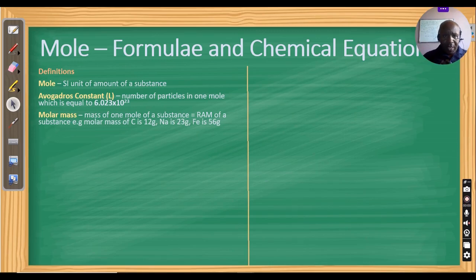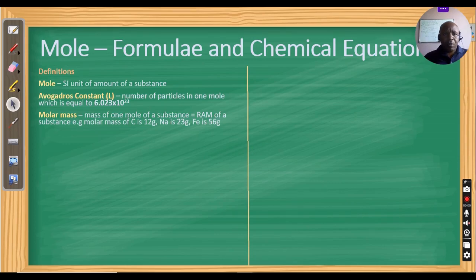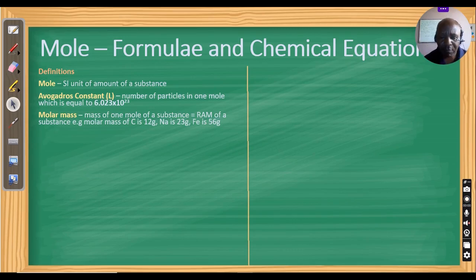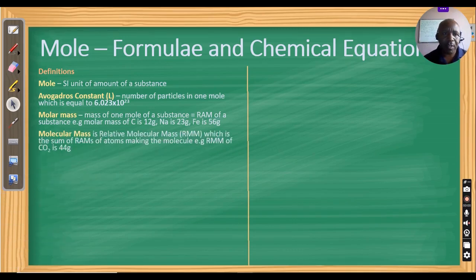Molar mass is the mass of one mole of a substance, which we normally refer to as RAM — relative atomic mass. It is normally given even in exams. For carbon it is 12 grams, for sodium it is 23 grams, and for iron it is 56 grams.